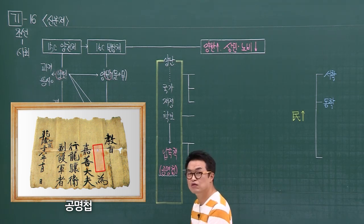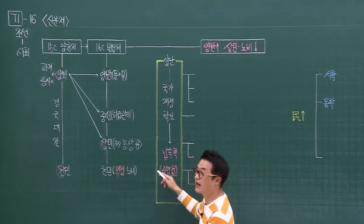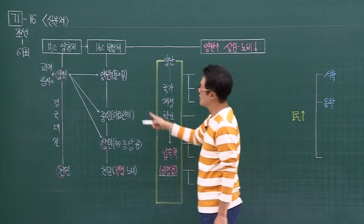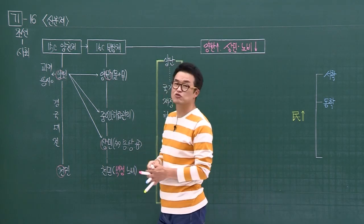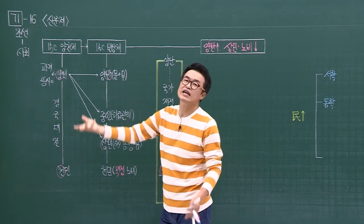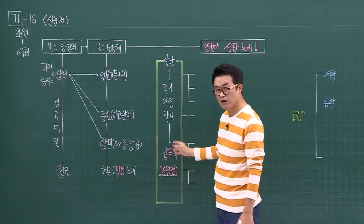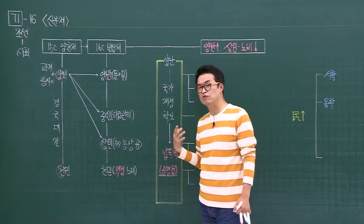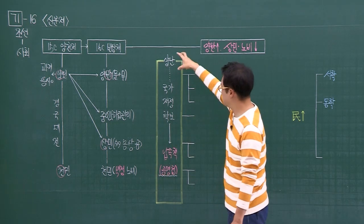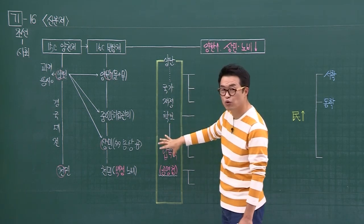이게 엄청난 거죠. 왜냐면 양반이 되면 군역의 의무가 없어요. 군대 가지 않아요. 그러니까 포를 내지 않아도 된다는 이야기죠. 이렇게 이것을 내면 양반 행사하면서 포를 내지 않아도 되는 혜택이 주어지는 것이죠. 이 양란 이후 국가 재정 확보를 위해 남발했던 납속책, 공명첩으로 인해 발생한 모습이 조선 후기의 핵심입니다.